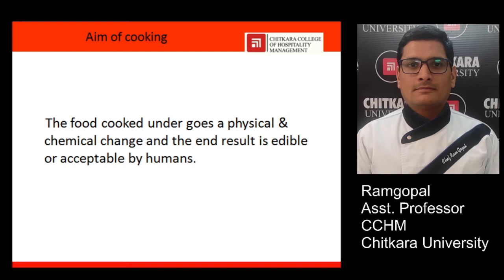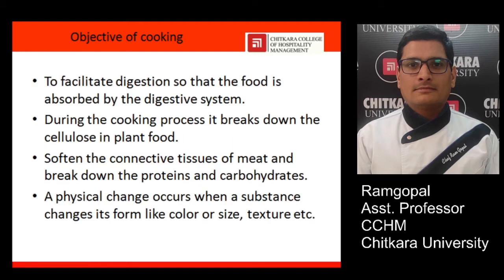There are some objectives of cooking as well. The first objective is that whenever you are cooking food, the cooked food product is supposed to be digestible and needs to be absorbed by our digestive system. During the cooking process, heat converts the cellulose into a simple molecular structure so that it can be absorbed by our body.